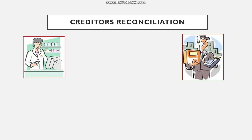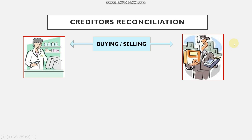Coming now to our main focus — creditors reconciliation. The first thing we need to do is identify the key role players. We are the business, and we will be buying goods from another party — the supplier. If we buy goods on credit from them, they become our creditor. So basically we have an interrelationship between these two parties: buying and selling.